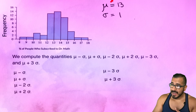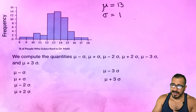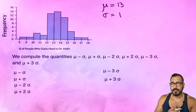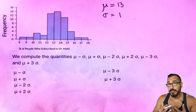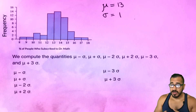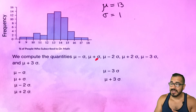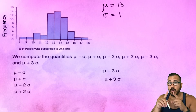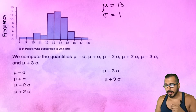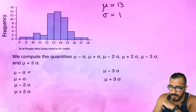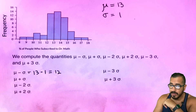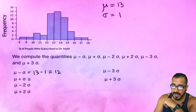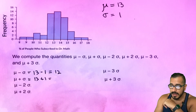The calculator gives us the mean. To keep things simple, I'll approximate the mean as 13 and the standard deviation as 1. So first, we compute mean minus one standard deviation: 13 minus 1 equals 12. Then mean plus one standard deviation: 13 plus 1 equals 14. So one standard deviation out gives us the interval 12 to 14.